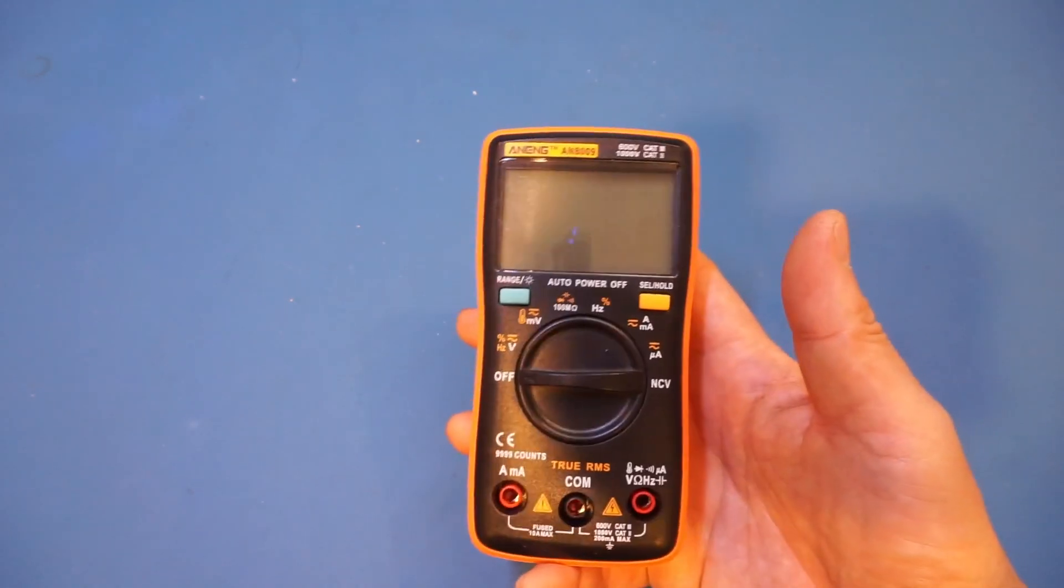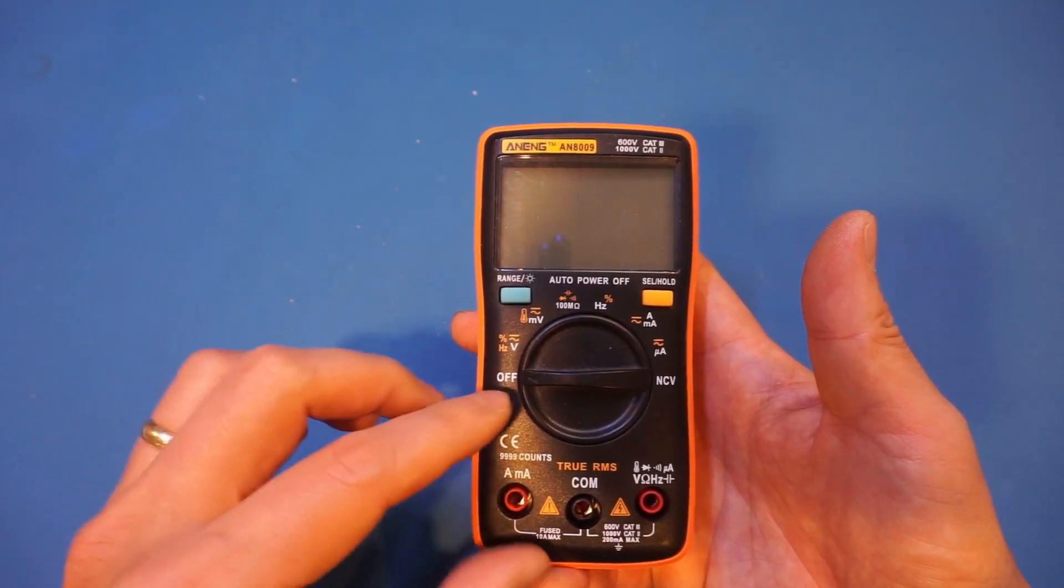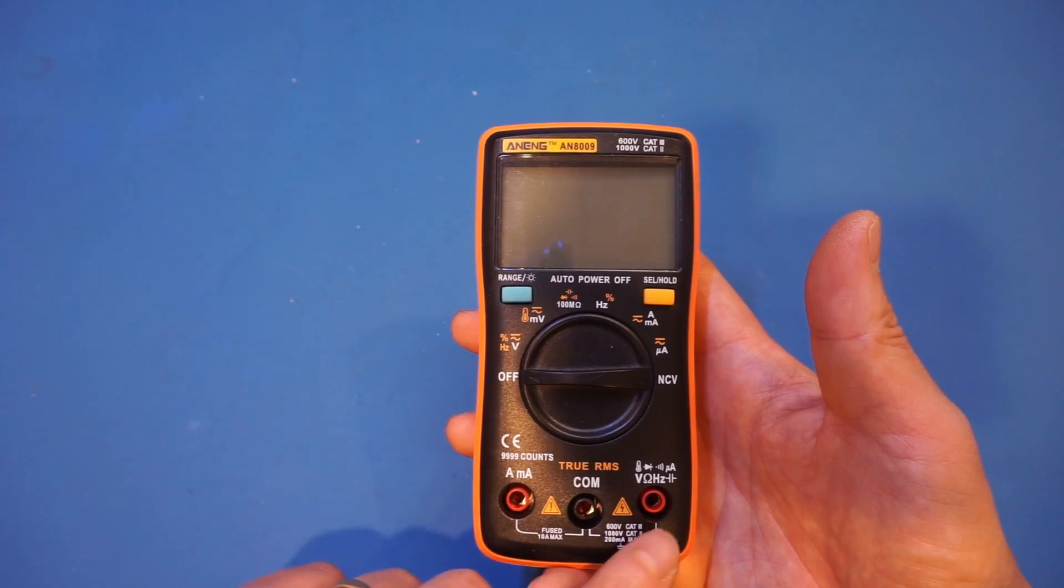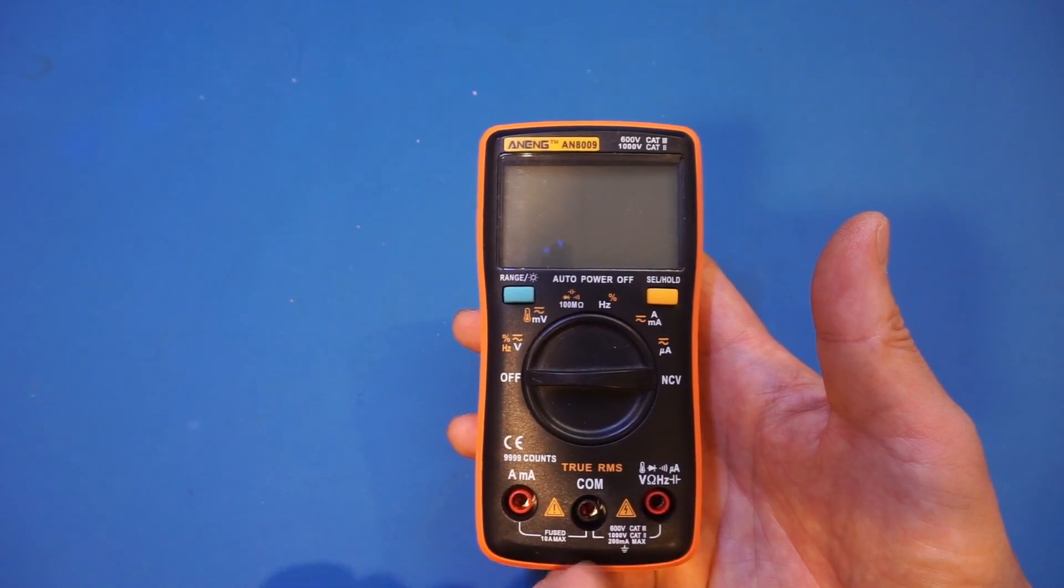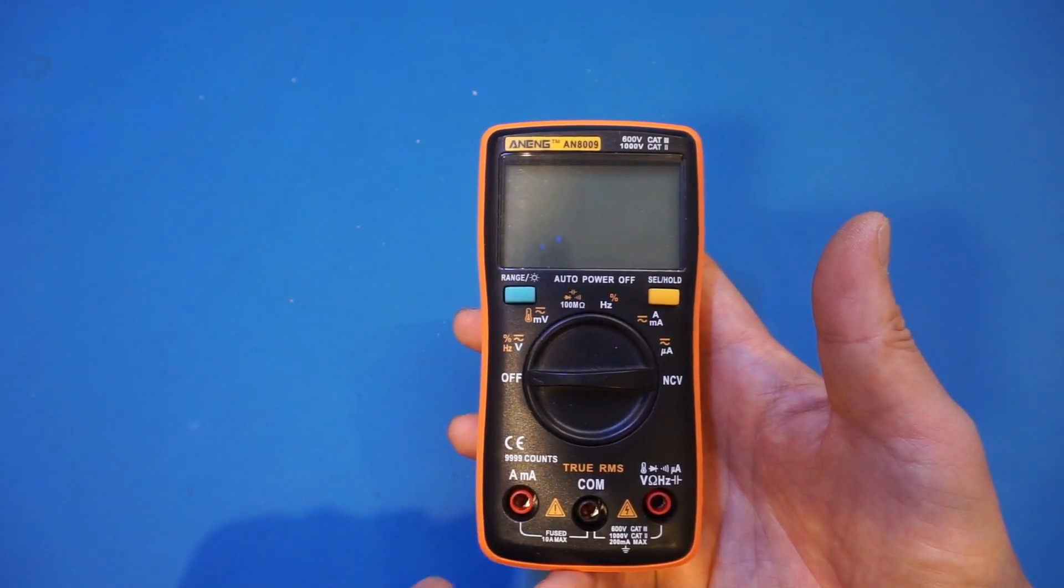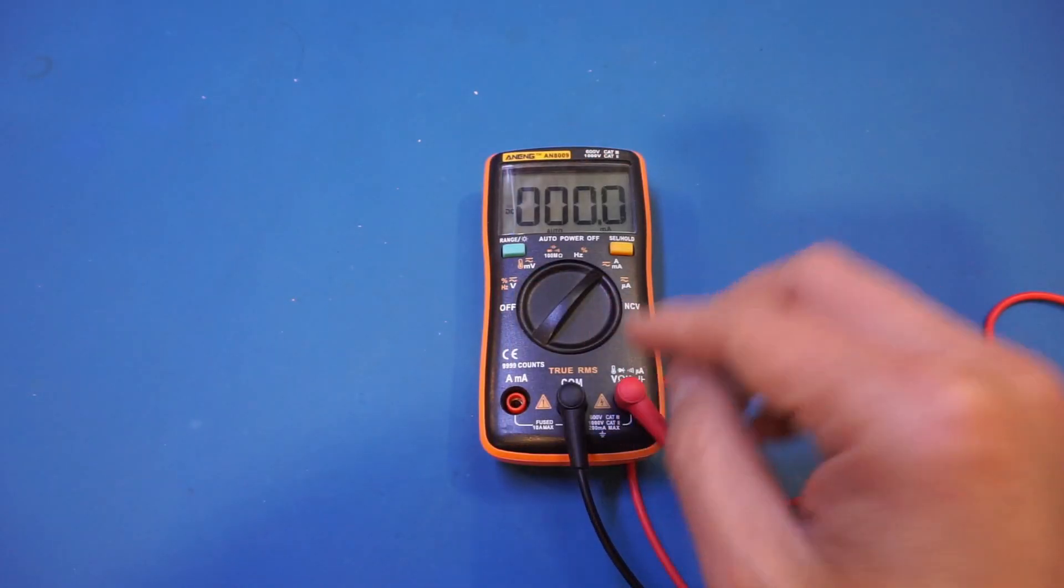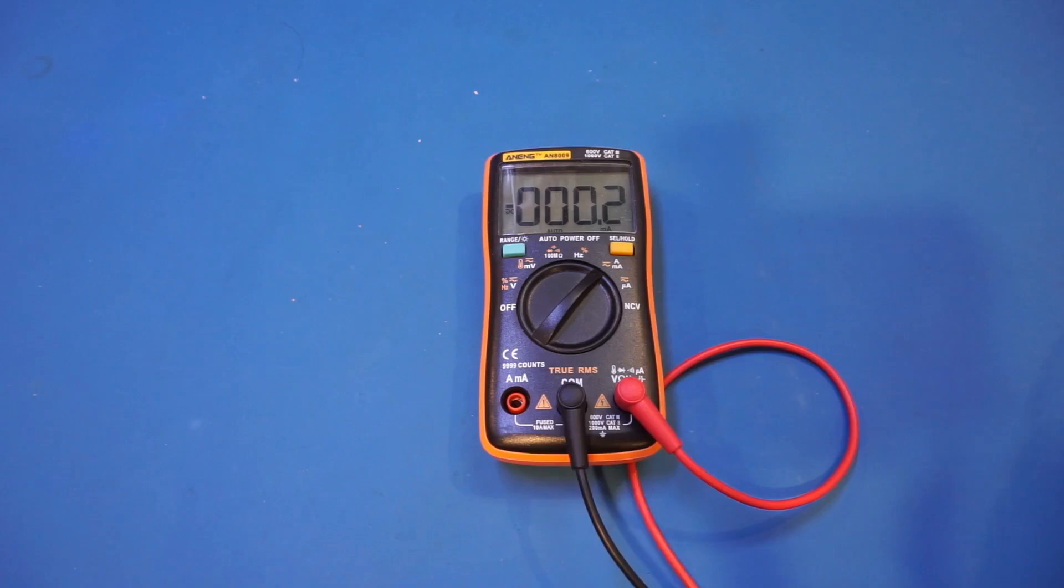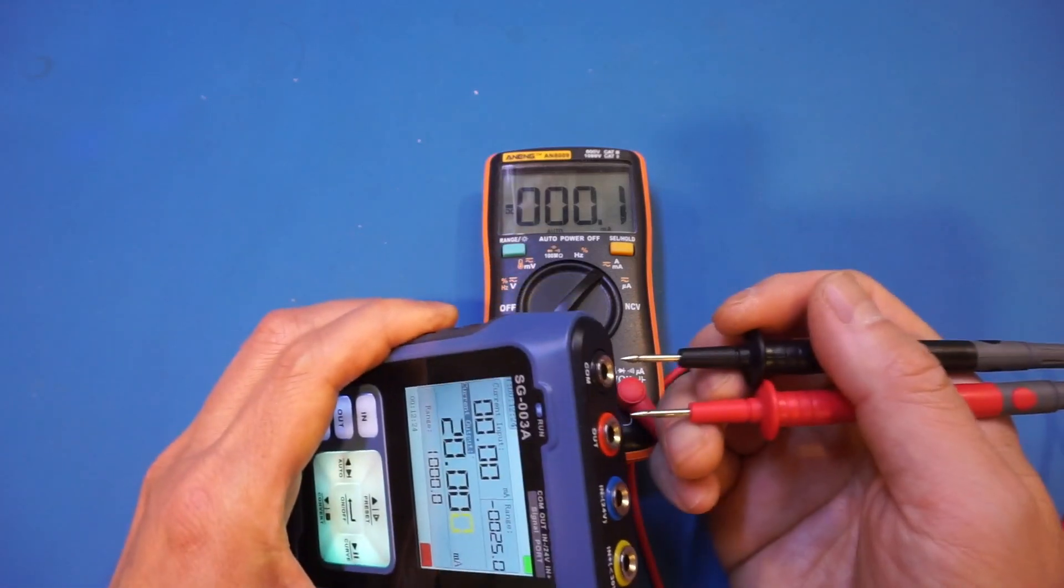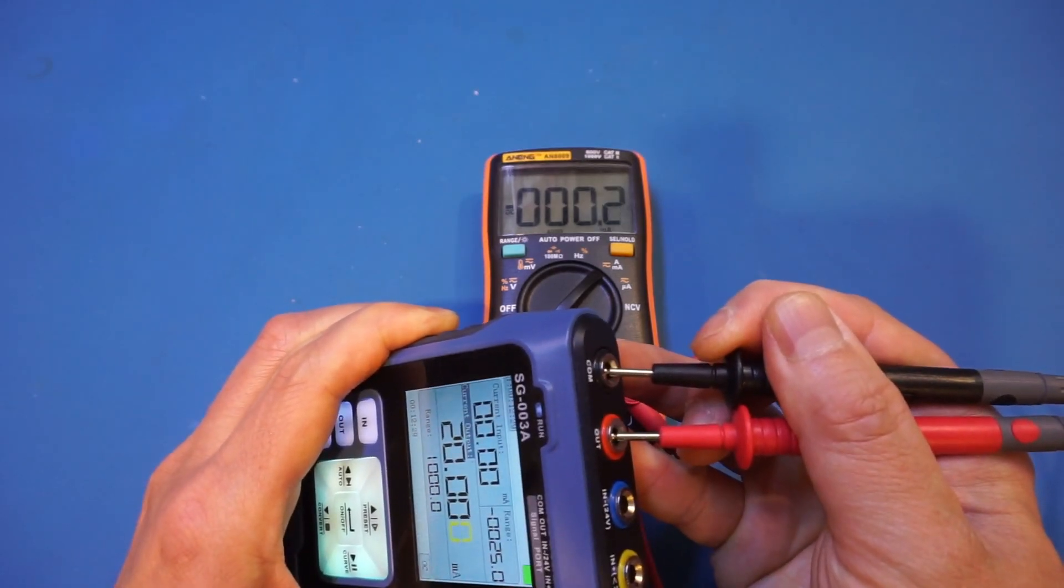But this is not always true for all these cheap meters. This AN-A009 I have here, you can see we also have three input jacks. But instead of having a dedicated current measurement, the current you can see here for microamp measurement, we also multiplexed that with the voltage ohm measurement. So potentially, this could be an issue as well. Let's quickly check it out. Here the leads are in the voltage ohm and microamp measurement range, whereas the dial currently is set at milliamp. So we're not getting any readings, which is actually correct.